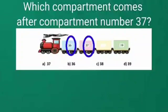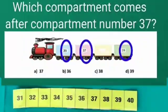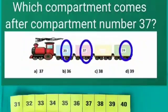Dear students, there is no number written in third compartment. And number written in fourth compartment is 39. Now we will read counting and see which number will come in empty compartment. Let's read counting dear students.